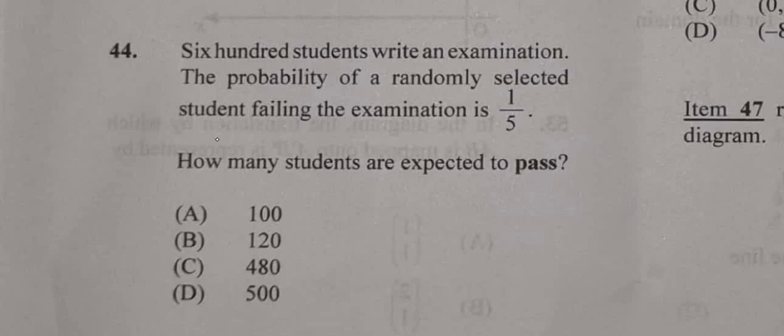So, there are 600 students, right? There are 600 students who would have written an exam. The probability of a randomly selected student failing the exam from that group is one-fifth. How many students are expected to pass?